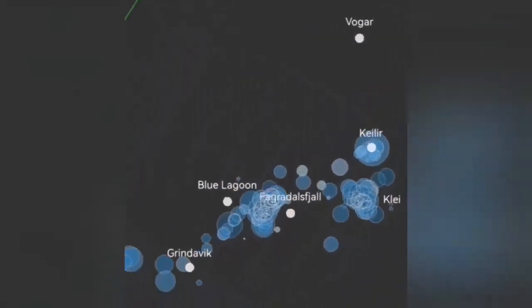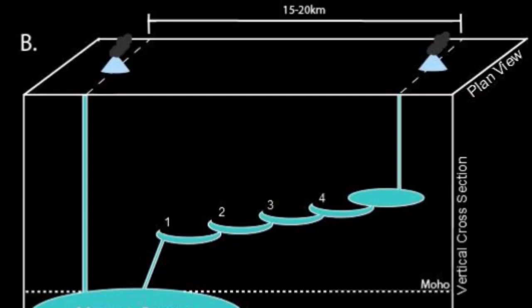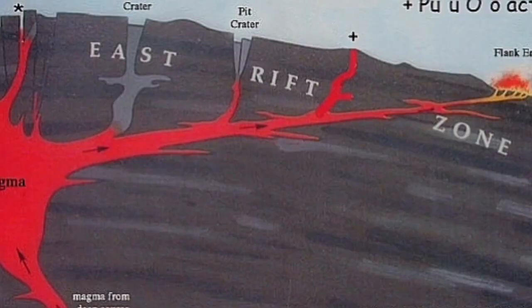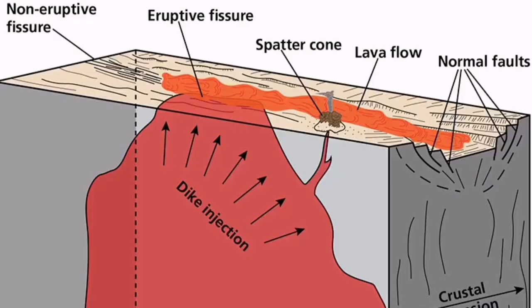This is the diagram or cartoon showing this transgressive sill moving from Svartsengi at an angle toward the town of Grindavik, the vicinity north part of it. You can see in this cartoon the same.